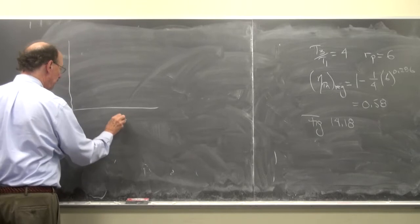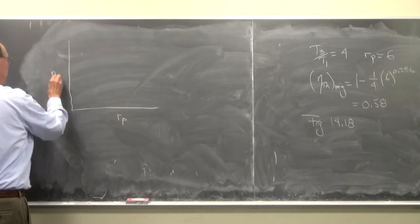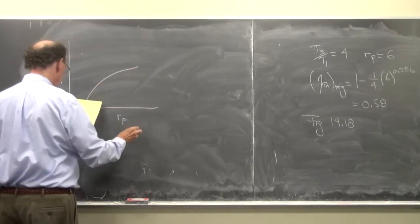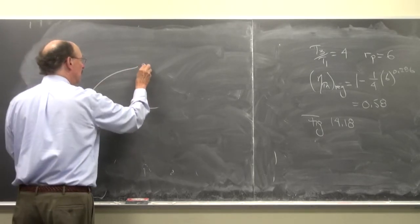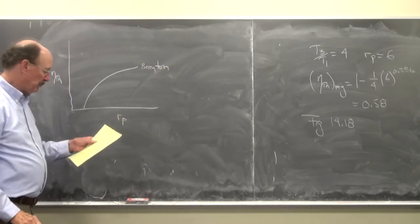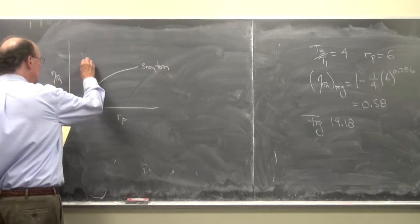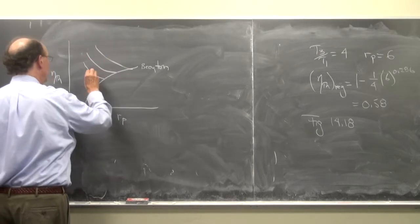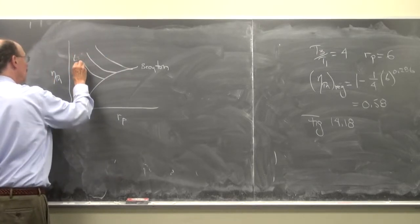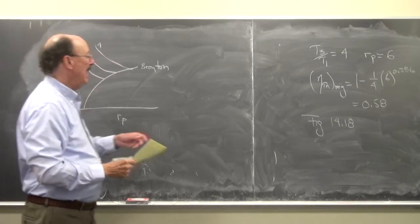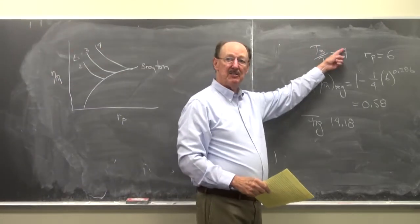I'm going to have R sub P along here. I'm going to have the thermal efficiency as the ordinate. And if I plot this, this will be for the Brayton cycle. And then you'll see that for various values of T coming in, T is equal to 2, 3, 4, etc. So that has to do with this value here.